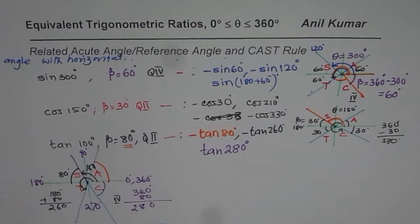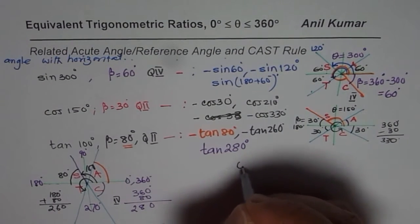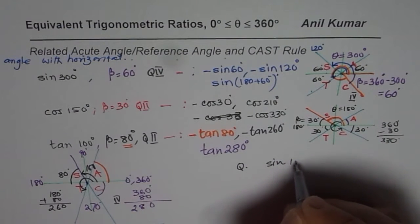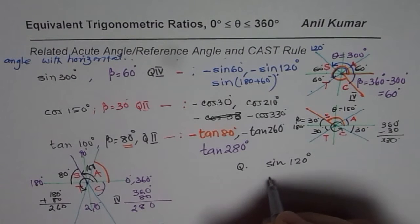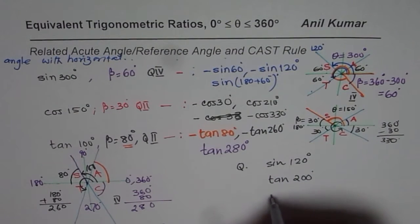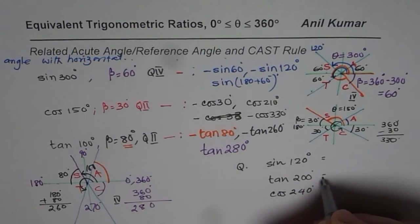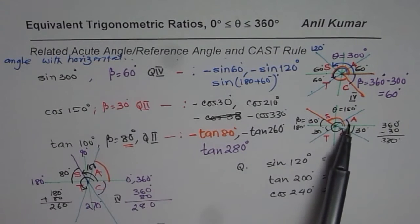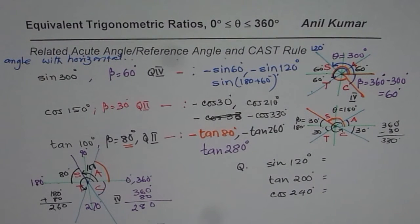I hope you have understood how to find related acute angles for any trigonometric ratio. As an exercise, write 3 equivalent trigonometric ratios for tan of 120 degrees, tan of 200 degrees, and cosine of 240 degrees. Basically, we need to find the related acute angle and apply the CAST rule to get the correct sign for each equivalent trigonometric ratio. Thank you and all the best.